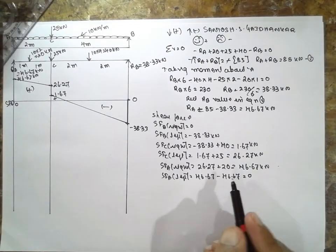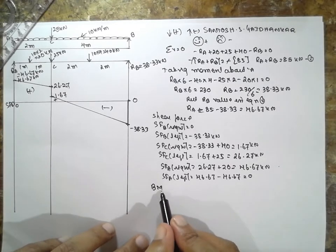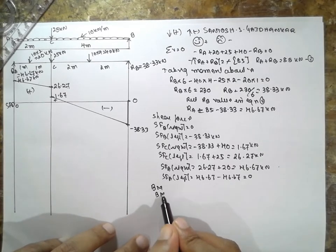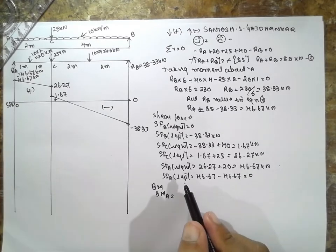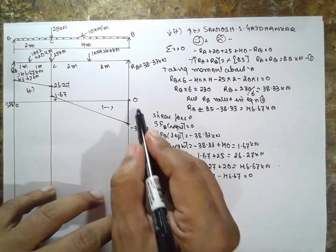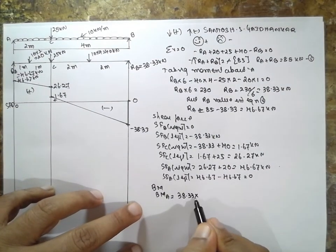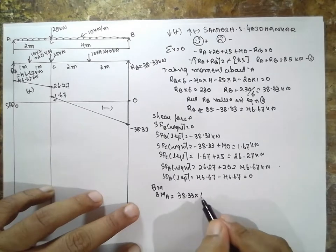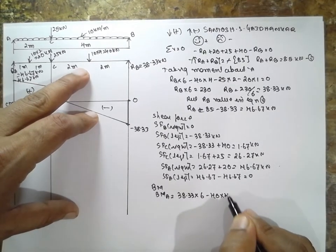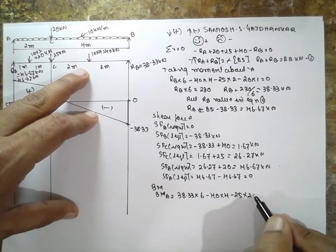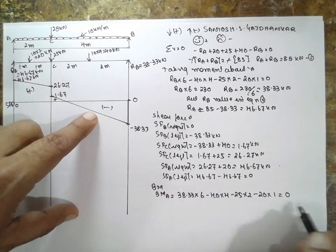Now bending moment. Bending moment at A, 38.33 into distance 6 minus 40 into 4 minus 25 into 2 minus 20 into 1 is equal to 0 because if you calculate it becomes 0.